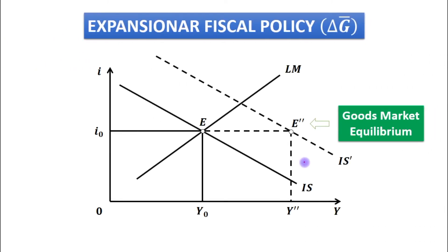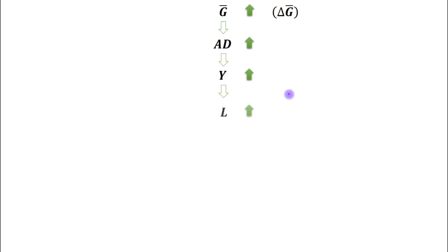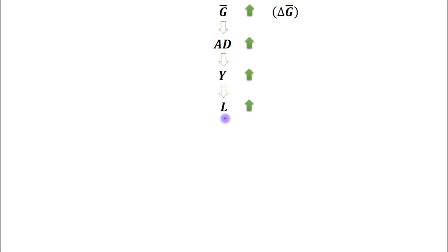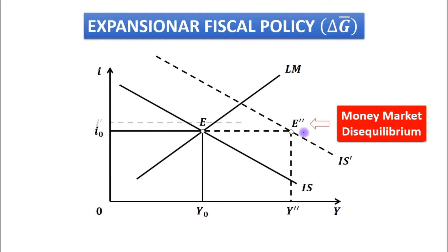But at this point there is money market disequilibrium. When output level increases, it will lead to an increase in money demand. That means money demand exceeds money supply, and that is the reason there will be money market disequilibrium. When money demand increases, the cost of holding money — that is, the interest rate — will be increased.